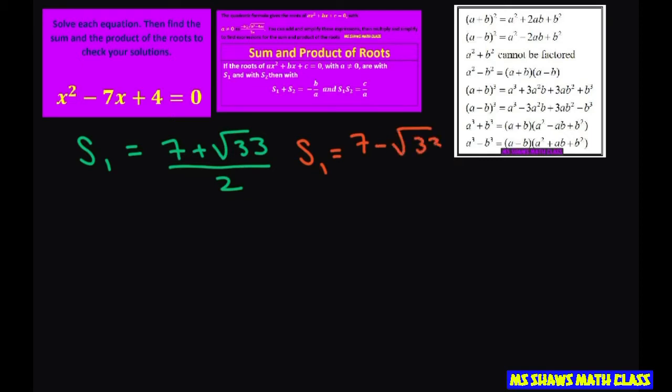Now we're going to do the sum and product of roots to check our solutions. Basically, what we want to verify is a = 1, b = -7, and c = 4. So let's